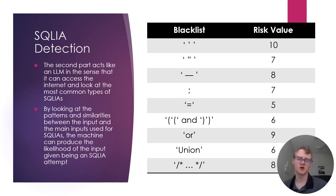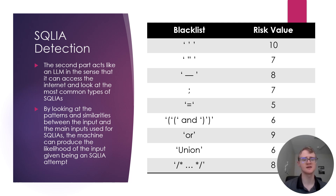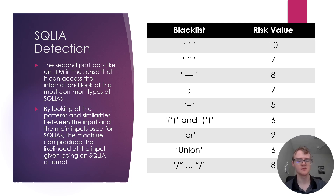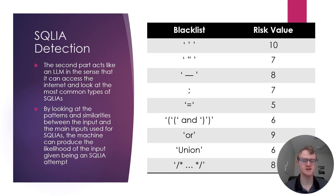The second part focuses on a probability value by looking at the patterns and similarities between the input and the main inputs used for SQL injection attacks. The machine produces the likelihood of a given input being an SQL injection attack as a risk value, where the higher the risk value, the more likely it is that an SQL injection attack is occurring.